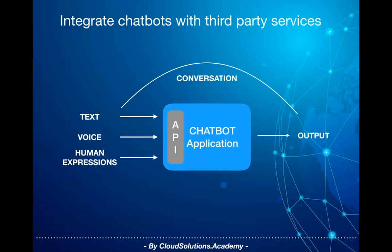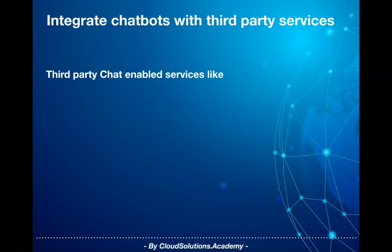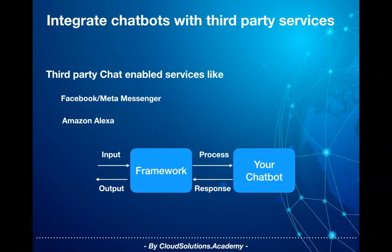If you already have an existing mobile application, you can embed this functionality as part of your mobile application. You can also release your chatbot implementation through third-party chatbot-enabled services like Facebook Messenger, or through voice-enabled services like Amazon Alexa. All of these chat-enabled services provide a framework to plug in your own implementation, with hooks or code interceptors for intercepting the chat message, so you need to extend the framework and plug in your own implementation.